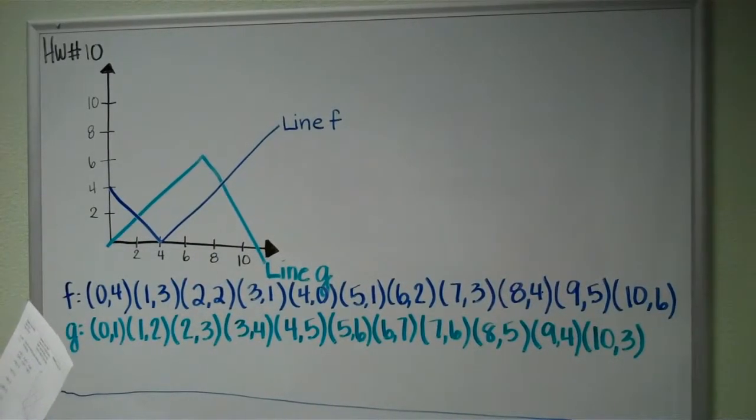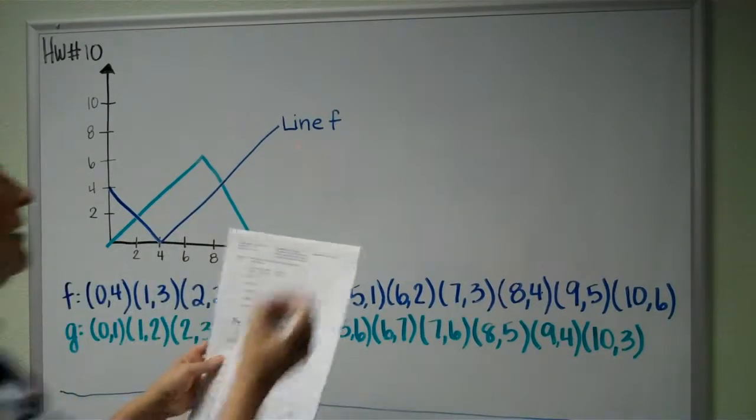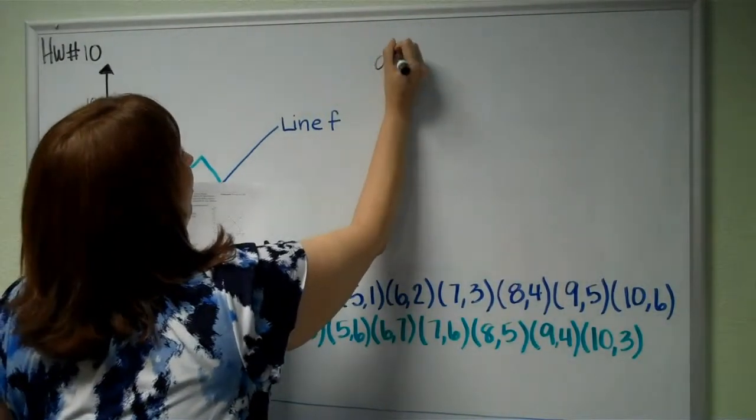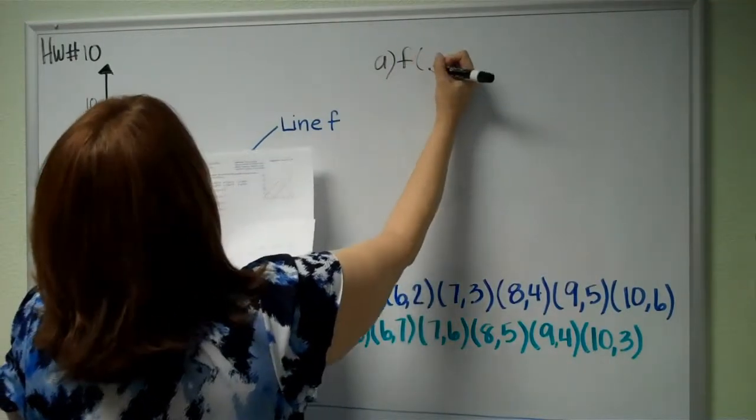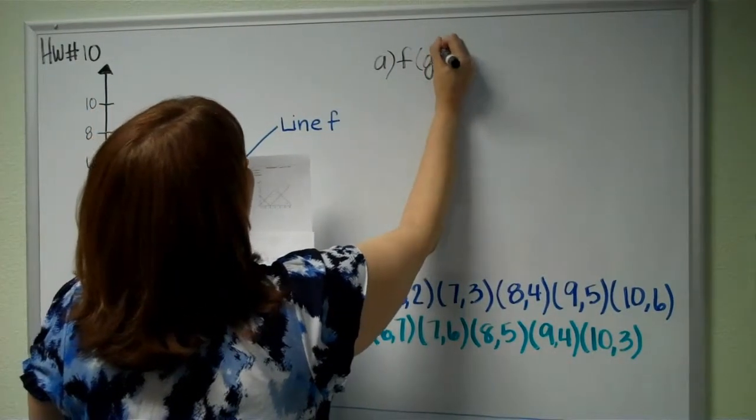Using the accompanying graph, estimate each of the following. Part A: What is F of G of 7?